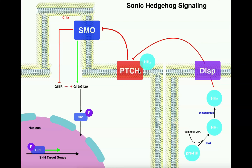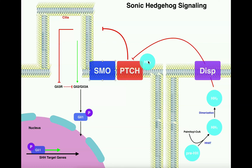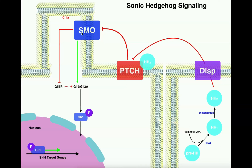If you inhibit patched, patched cannot inhibit smoothened, because patched itself is inhibited. So because you're inhibiting the inhibition on smoothened, smoothened by default will become activated. Initially, when there was no hedgehog, smoothened was in a normal part of the membrane with patched, which allowed patched to inhibit smoothened. But as soon as hedgehog binds to patched and inhibits it, smoothened is free to move into the cilia, and that's actually where it's going to be functional in this cell.